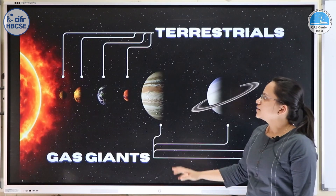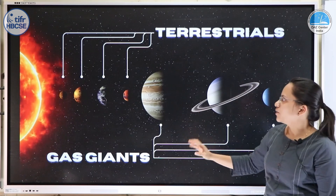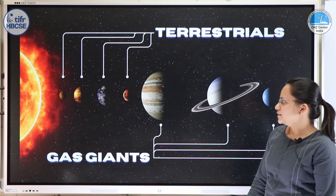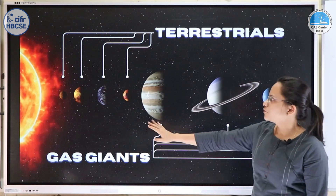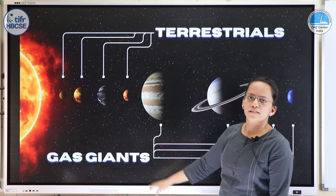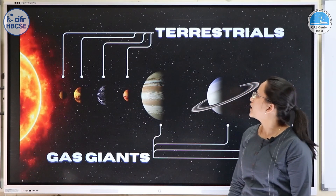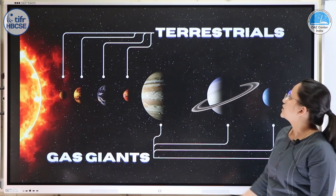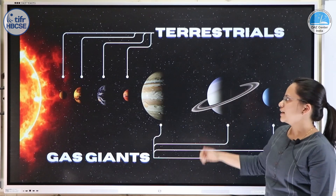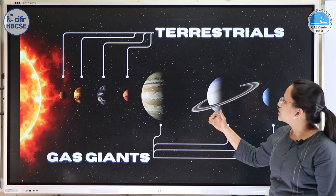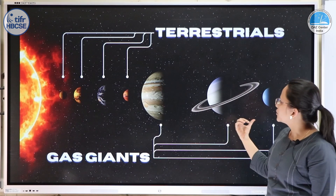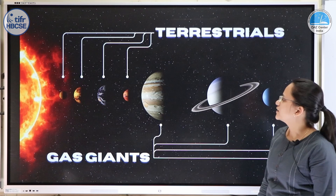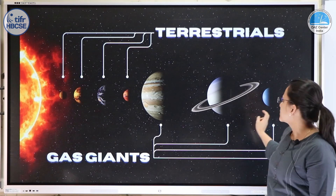Let us first talk about the planets. The first four planets in the solar system are the rocky planets or the terrestrials, and the last four planets are the gas giants.